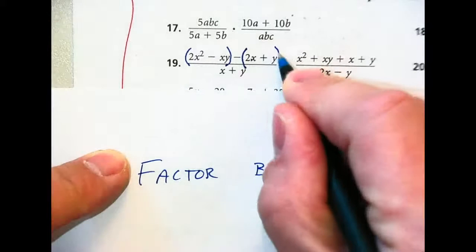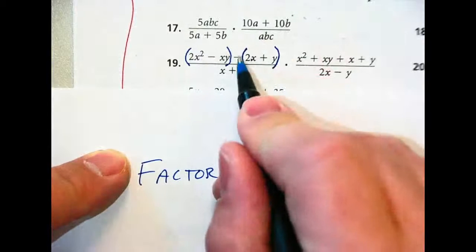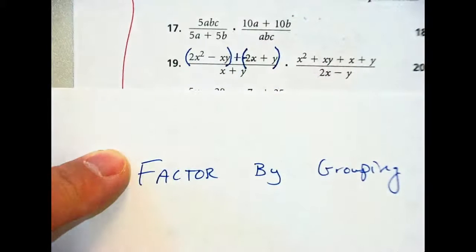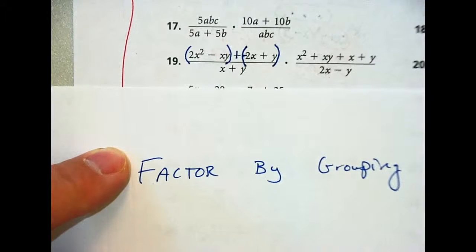Everyone see that? Some of you do. Some of you are zoning out right now. Now I'm going to make this a plus and actually keep that a negative 2x. You guys with me? So right now I've made two groups.